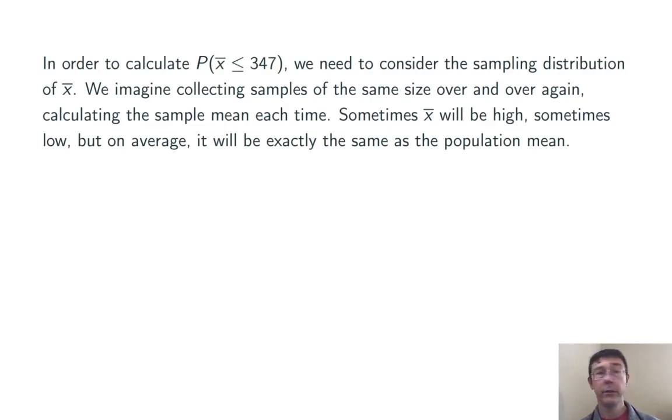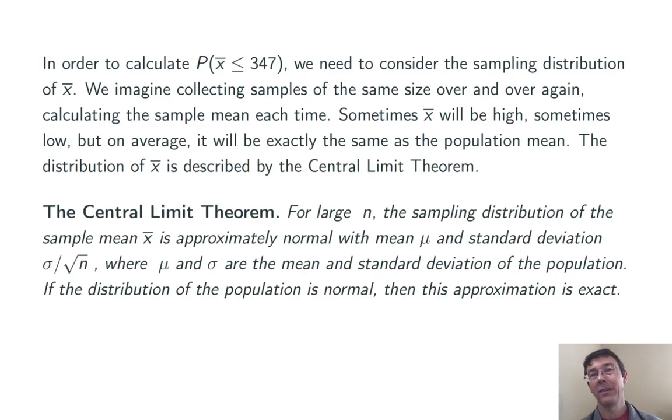We can say more using the central limit theorem, which says, let's just review this, that for large n, and usually 30 is more than enough, the sampling distribution of the sample mean X bar is approximately normal with mean mu and standard deviation sigma over the square root of n, where mu and sigma are the mean and standard deviations of the population. Moreover, if the distribution of the population is normal, then the approximation in the central limit theorem is exact, and the distribution of X bar is exactly normal.